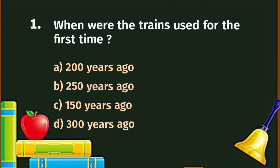Question number 1. When were the trains used for the first time? A. 200 years ago, B. 250 years ago, C. 150 years ago, D. 300 years ago. And the correct answer is C - 150 years ago.